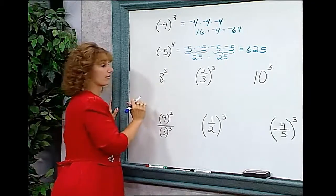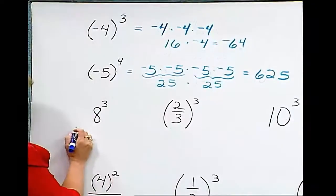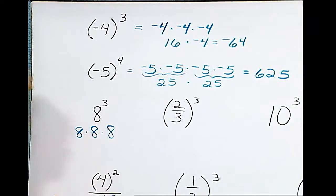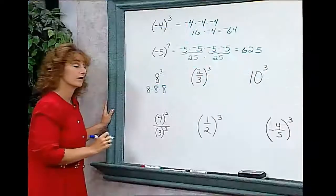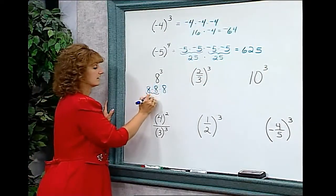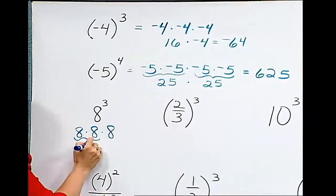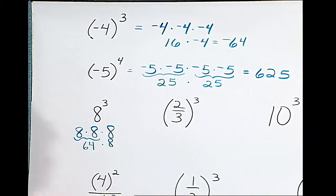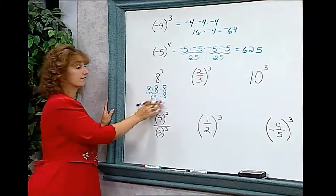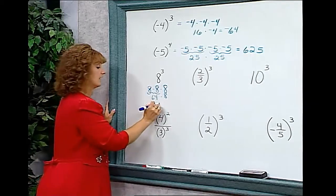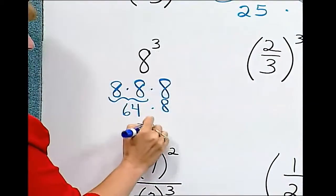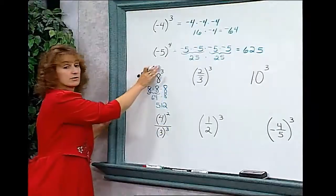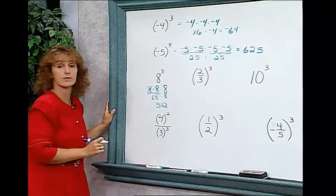8 to the third means 8 times 8 times 8. 8 times 8 is 64, so we need 64 times 8. And 64 times 8 is 512. So 8 to the third is 512.